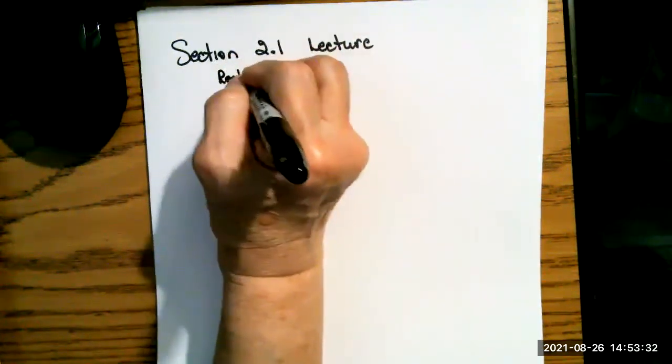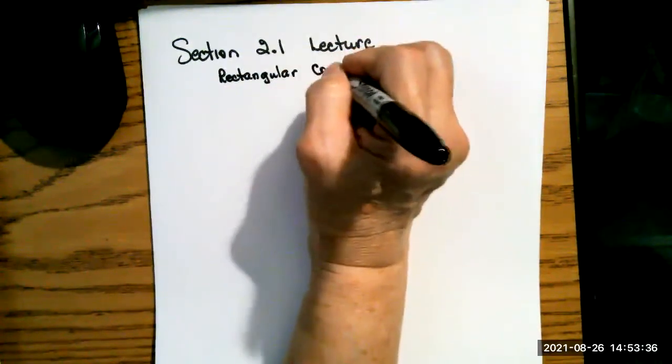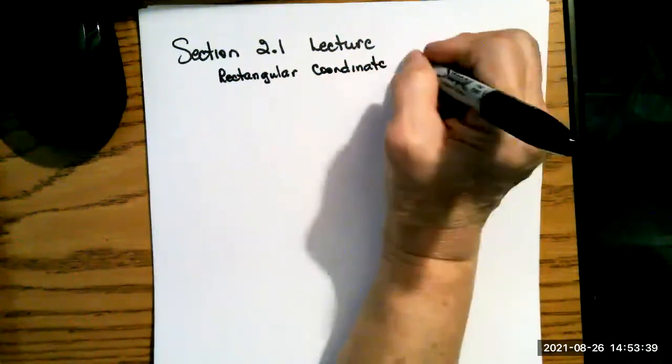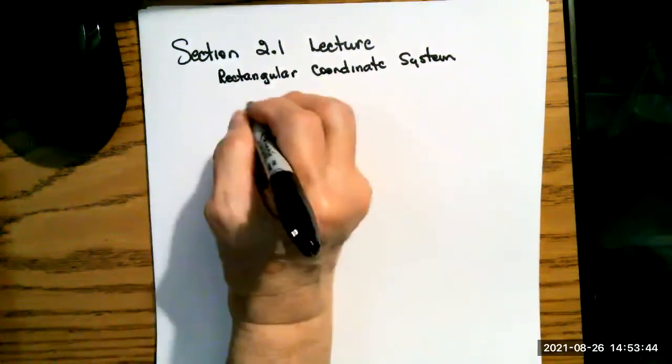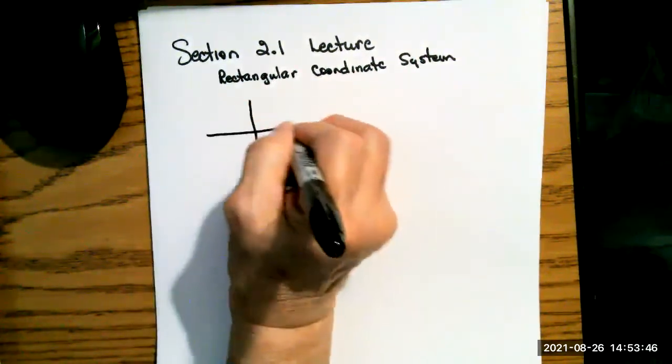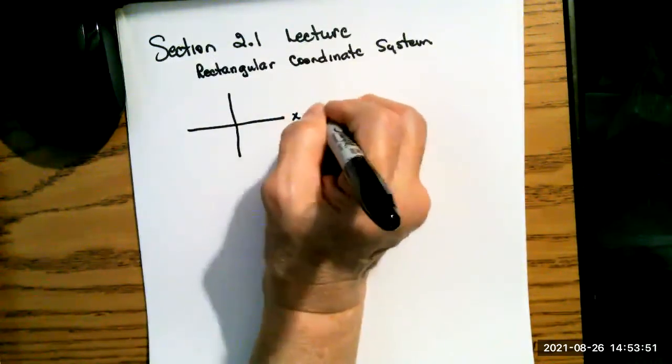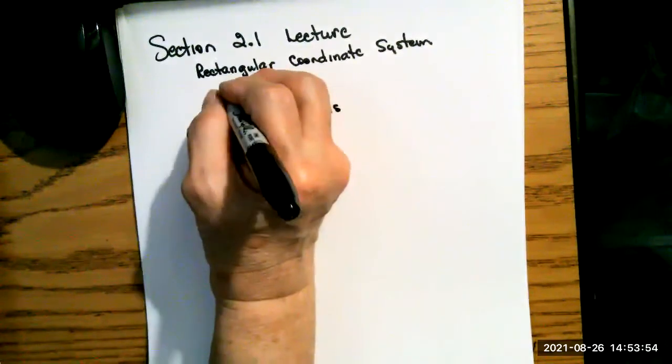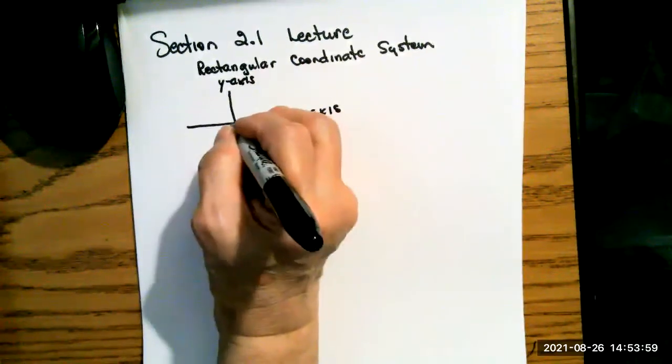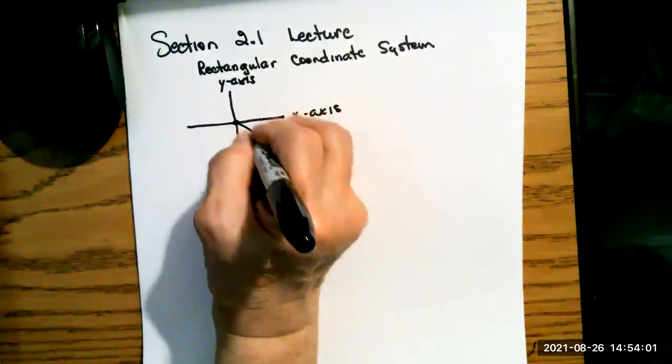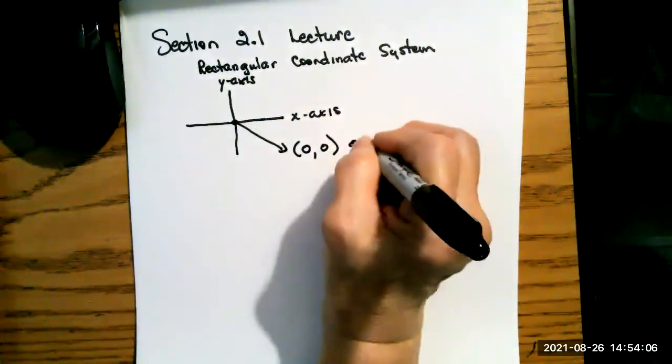First of all, we're going to be talking about the rectangular coordinate system. Sometimes they call it the Cartesian graph, but it's made up of a little cross space like this with two axes. This is the x-axis, goes across horizontally, and this is the y-axis that comes up and down vertically. The place where the two cross is a point, and it's the point zero, zero, which is called the origin.